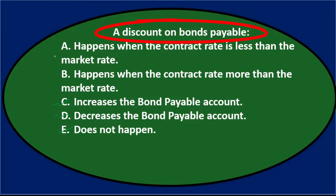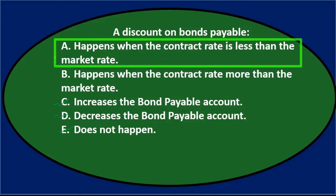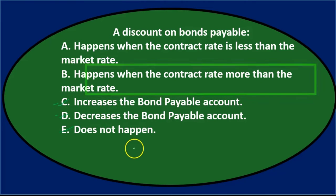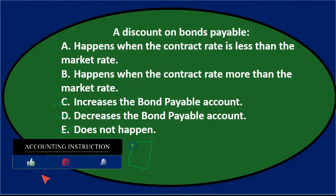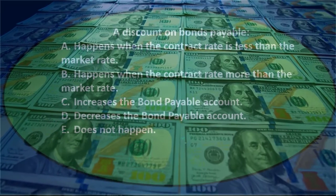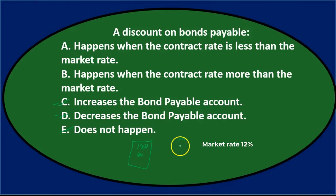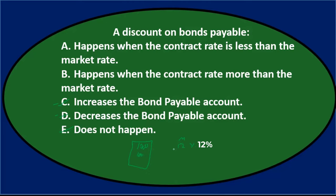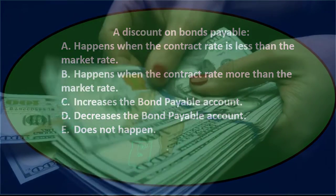So it's between A, which says a discount happens when the contract rate is less than the market rate, and B, which says it happens when the contract rate is more than the market rate. Consider a scenario: you have a thousand dollar bond at a ten percent contract rate. If the market rate is twelve percent, investors won't give you a thousand dollars since they'd only get ten percent when they can get twelve percent elsewhere. So you'd have to accept less than a thousand — you'd issue it at a discount.